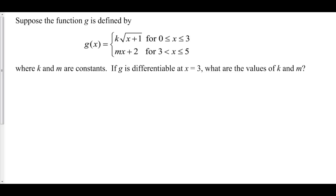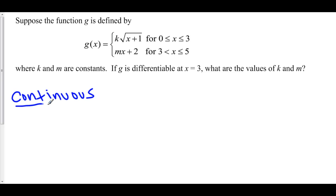Well, if g is differentiable at x equals 3, then it is therefore not non-differentiable. There are four types of non-differentiability: 1) corner, 2) cusp, 3) vertical asymptote, 4) any type of discontinuity. So if g is differentiable at x equals 3, that means it also has to be continuous at x equals 3. For g to be continuous, the left-hand limit of g as you approach 3 has to equal the right-hand limit as you approach 3.